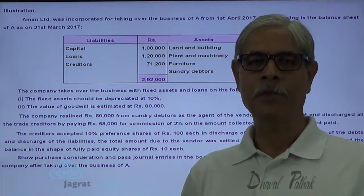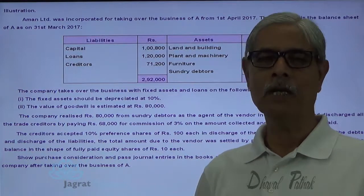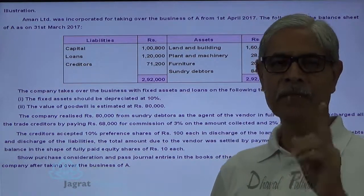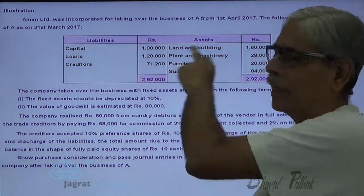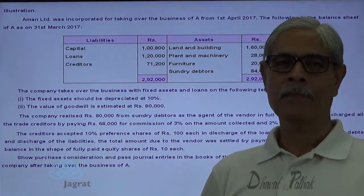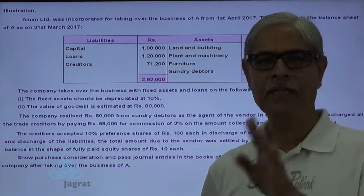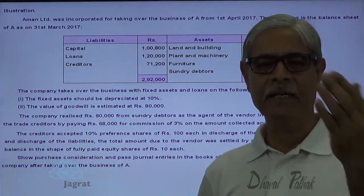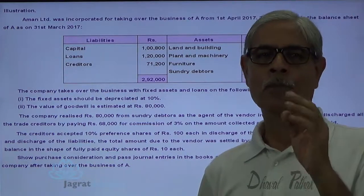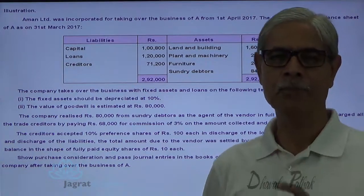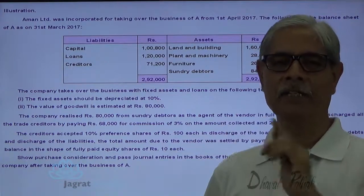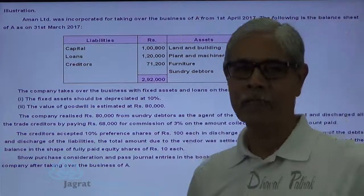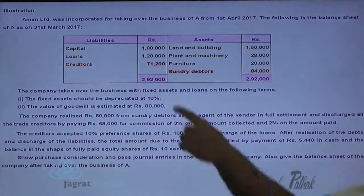I am going to prepare the balance sheet in the form of Schedule III. The business of the sole proprietor is purchased by the company. The company has purchased all assets and liabilities except debtors and creditors. For debtors, the company has committed to collect the debtors on behalf of A, and to pay the creditors on behalf of the vendor.